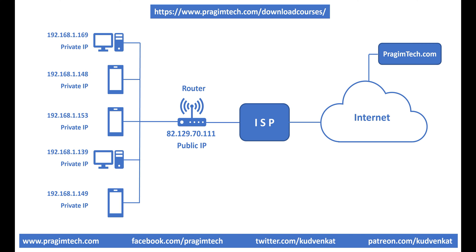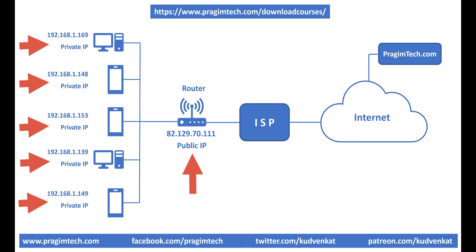In our example, we have five devices — two computers and three mobile phones. All five devices share the same public IP address but each has a unique and different private IP address. This is how the router is able to send the response it received from the internet to the specific device that made the request.